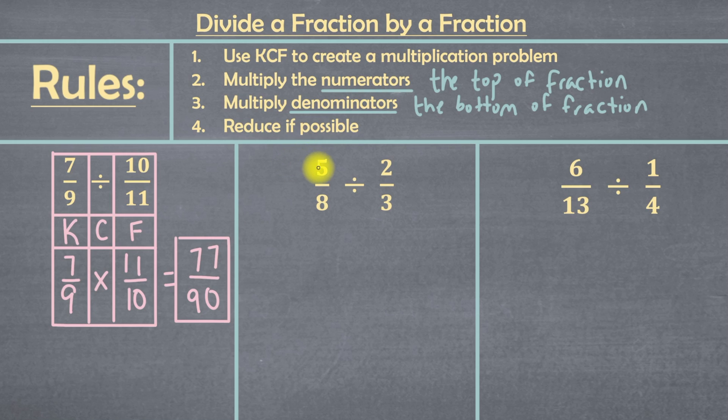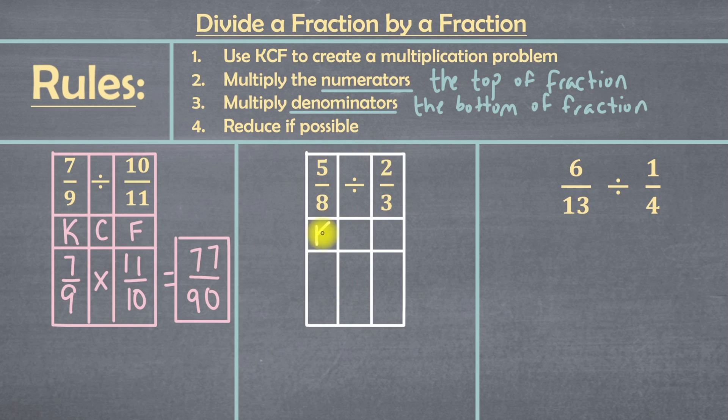So example 2 says 5 over 8 divided by 2 over 3. Like it says in rule 1, we have to make sure we use KCF to make it into a multiplication problem. Now that we've set up our KCF chart, let's start with the first fraction, 5 over 8. Since that's in the K column, we're going to keep it exactly the same. Next is our C column. And C stands for change. And what are we changing? Well, we're changing this division into multiplication.